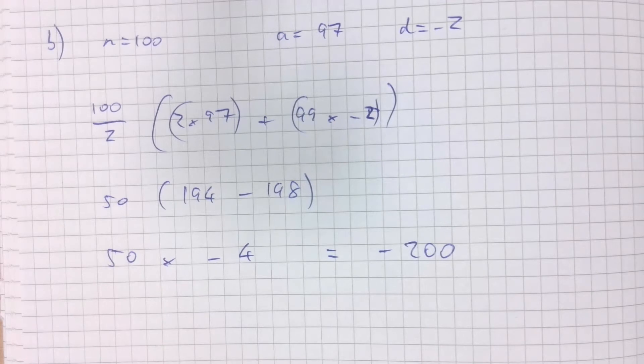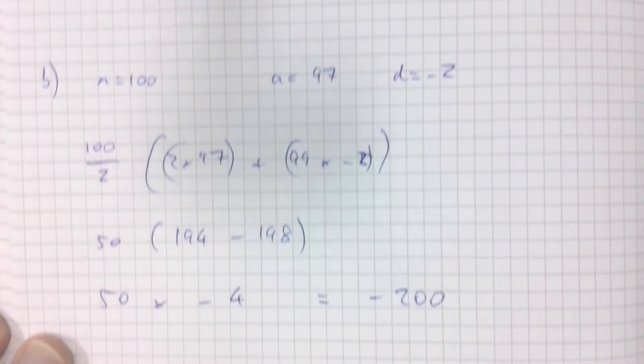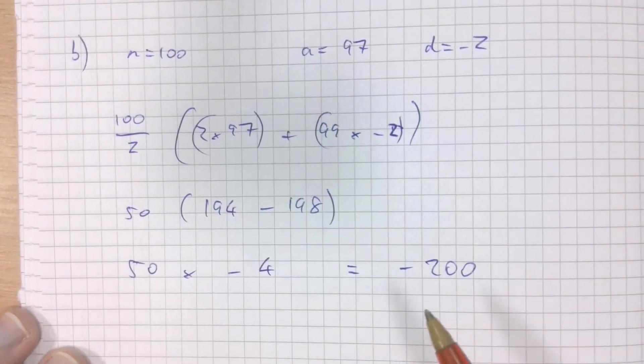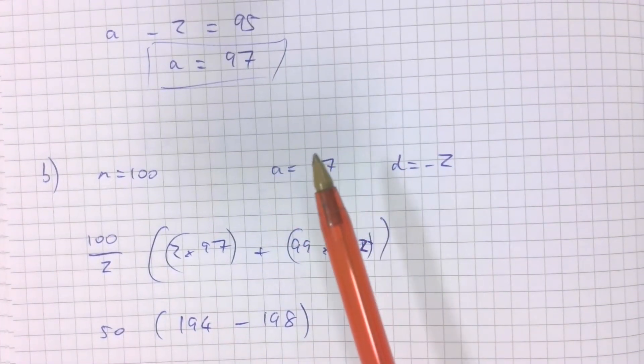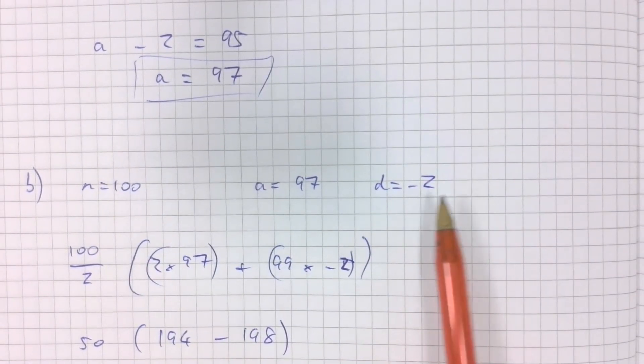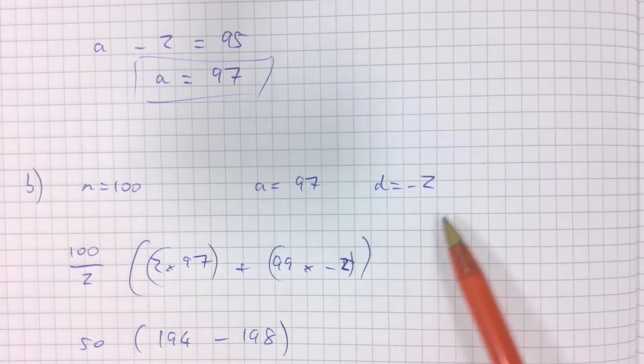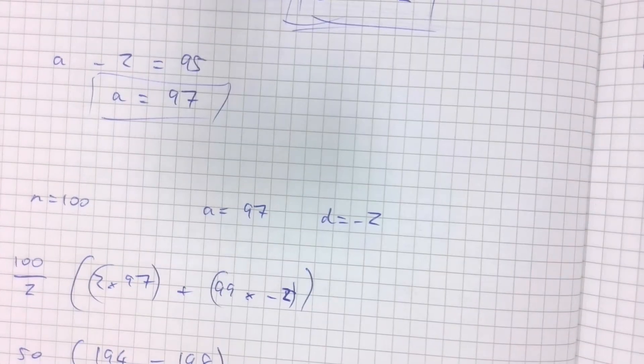100 divided by 2 is 50. 2 times 97 is 194. And 99 times negative 2 makes negative 198. So 194 take away 198 is effectively negative 4. So 50 times negative 4. Negative 200. Part C: Sn is the sum of the first n terms. What is the maximum value of Sn?